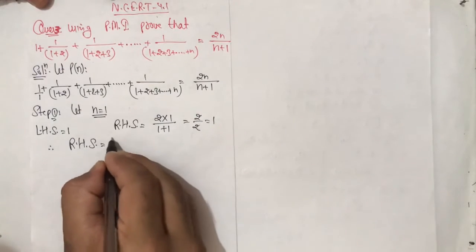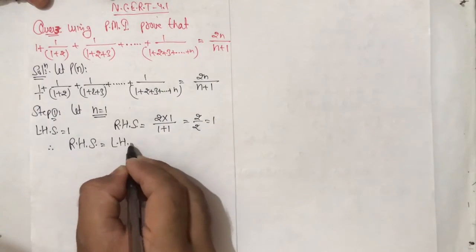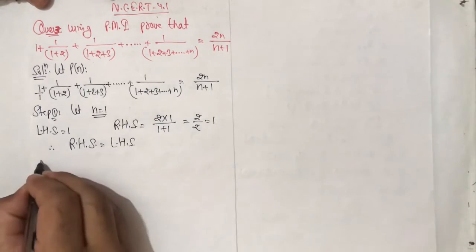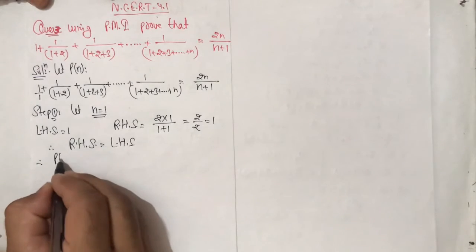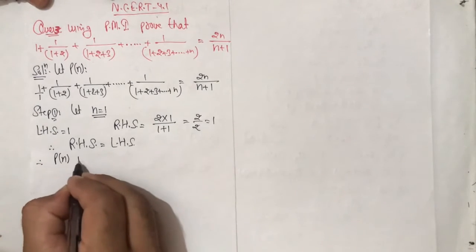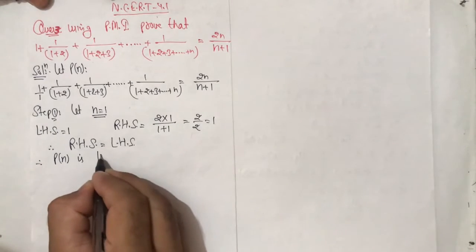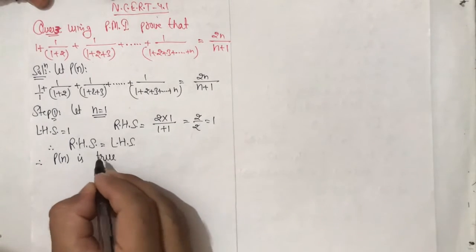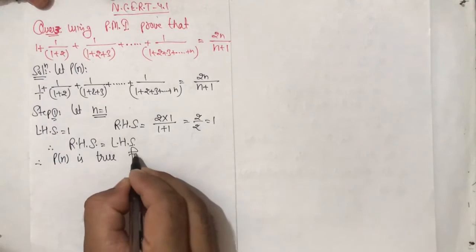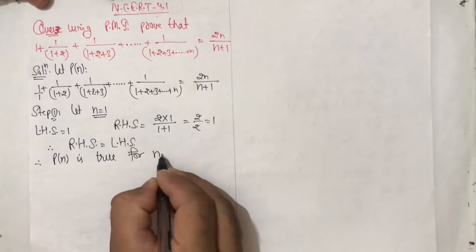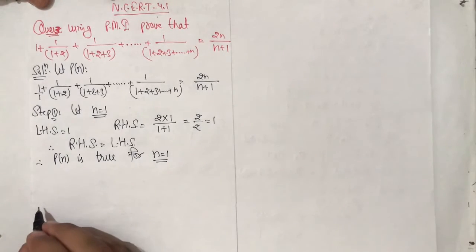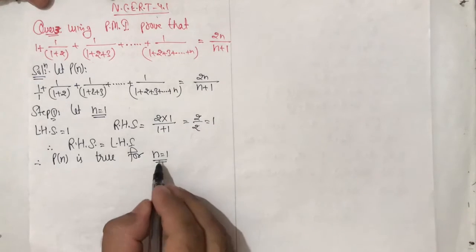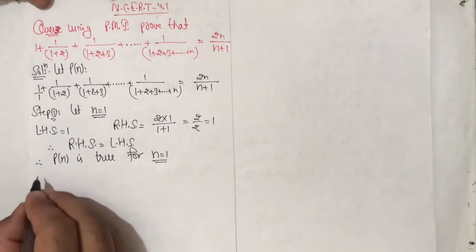Therefore, right hand side is equal to left hand side. Therefore, P(n) is true for n equal to 1.